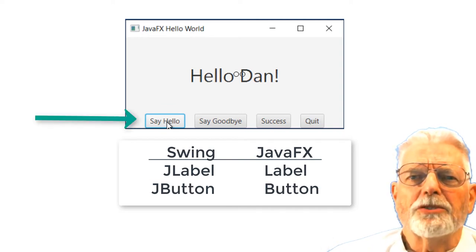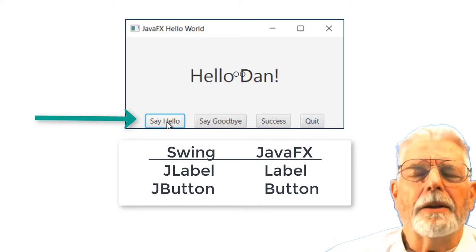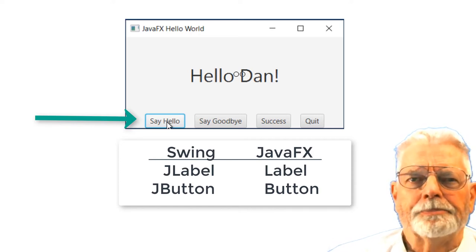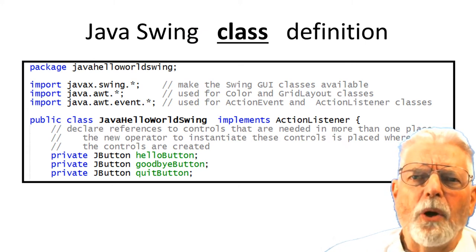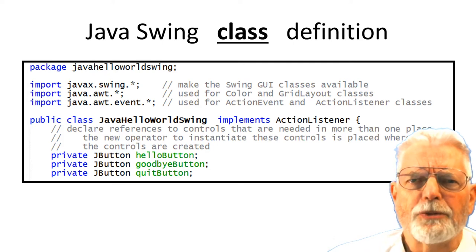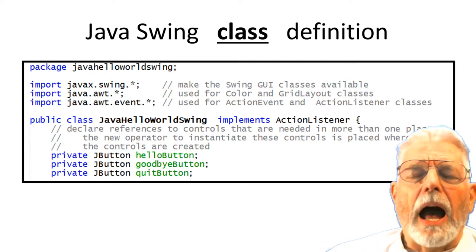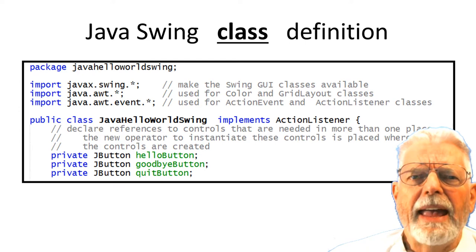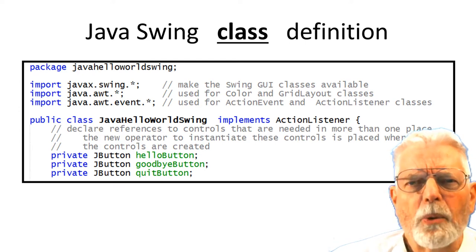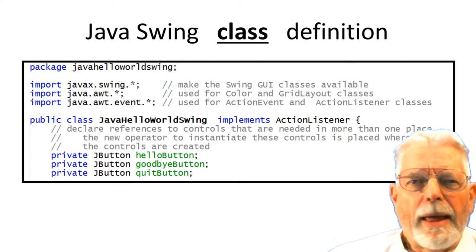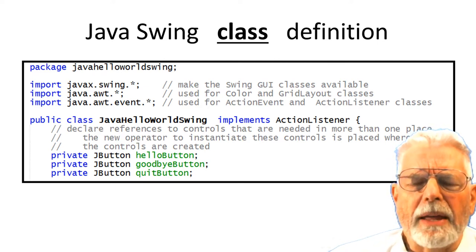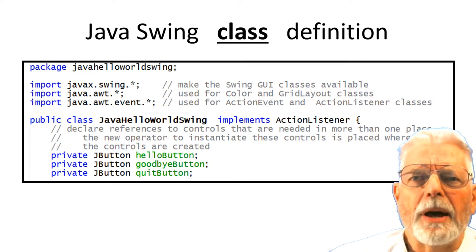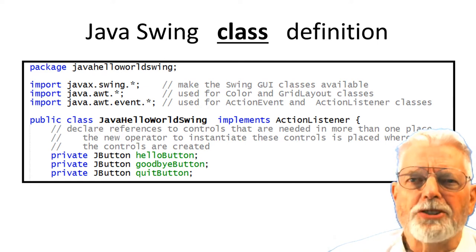The controls for buttons are called JButton and Button respectively. At this point in the discussion, I will be going over the code for both the Swing and JavaFX versions of the program. For the lab assignment, you only need to find the places in the code to update your name in the hello message and add a button for success. Try not to get overwhelmed with too much information.